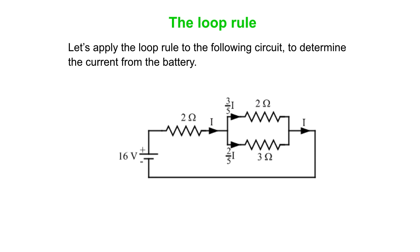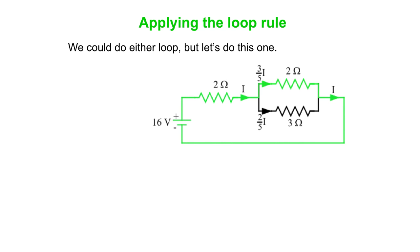So let's apply the loop rule to this circuit, and our goal is to determine the current from the battery. And remember, we could do this another way. We could collapse the circuit down to a single equivalent resistor, and expand it back up again, but we're going to do it this way instead.